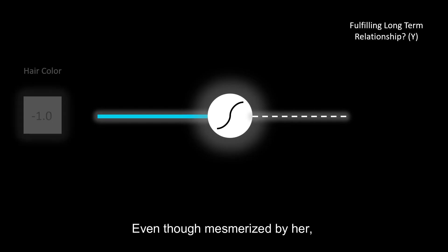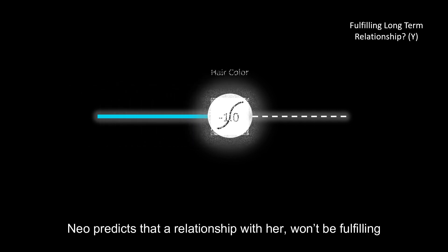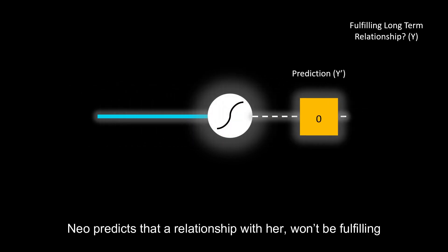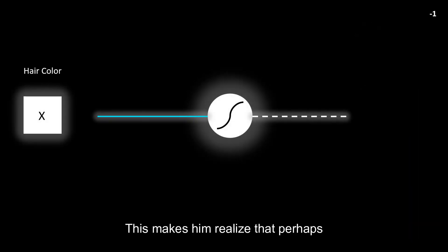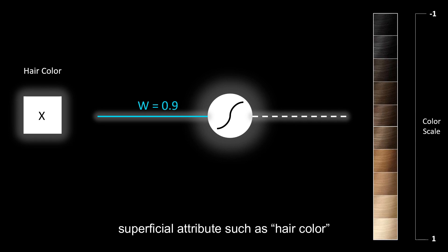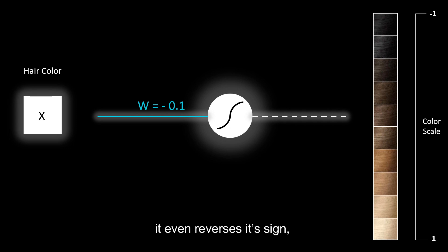Even though mesmerized by her, this woman is not blonde. Neil predicts that a relationship with her won't be fulfilling. He couldn't have been more wrong. This makes him realize that perhaps he was attaching too much importance to a superficial attribute such as hair color. His mental model hence not only reduces its weight, it even reverses its sign, now that he has grown a liking towards darker hair shades.